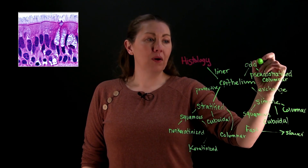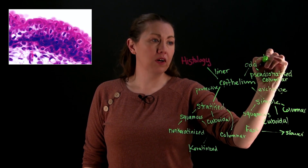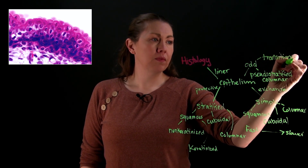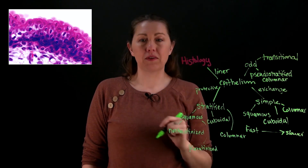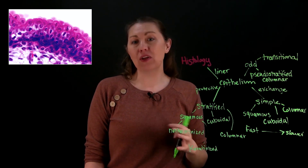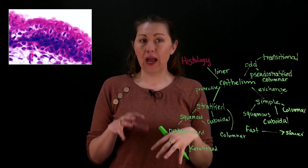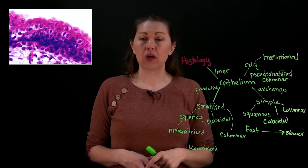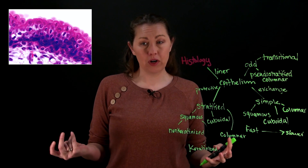The other odd ball is transitional epithelium — called transitional because it changes how it looks. It always has an arch or dome shape to the top of its cells. It lines the urinary system: the urinary bladder and the tubes going to and from it — the urethra and ureters. It changes appearance depending on whether the structure is filled with fluid or not.